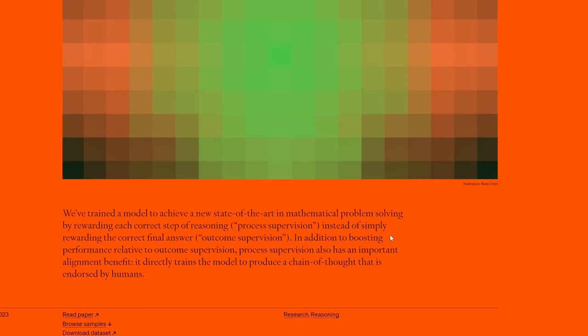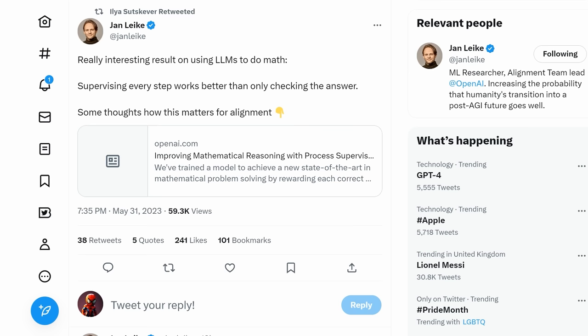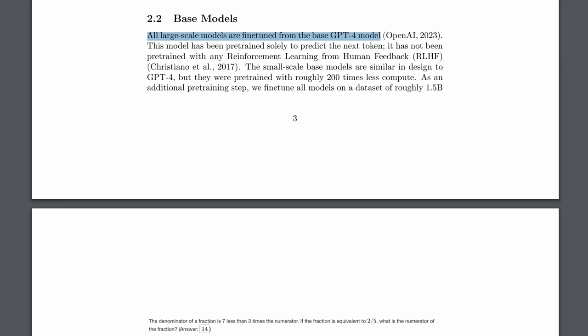It was to point out something that they also said down here. They say, in addition to boosting performance relative to just looking at outcomes or correct answers, this form of process supervision also has an important alignment benefit. It directly trains the model to produce a chain of thought that is endorsed by humans. Indeed, Ilya Sutskever retweeted this from the head of alignment at OpenAI, calling it a really interesting result. But let's leave alignment for later. Let's focus on what they actually did.